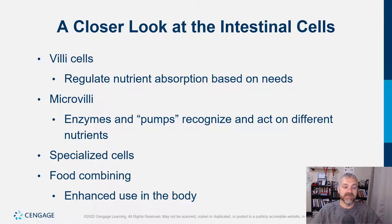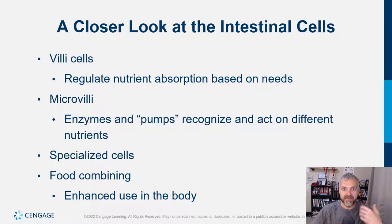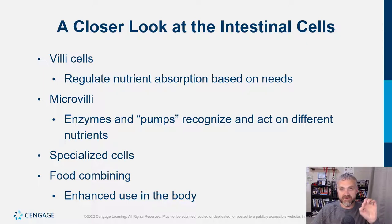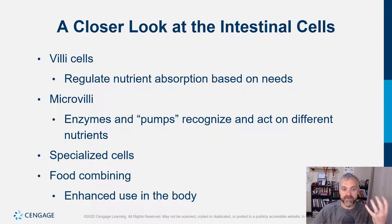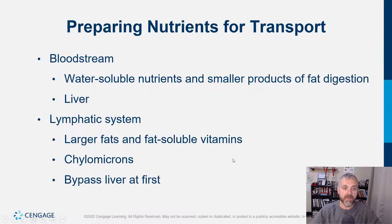Villi are the fingers that increase surface area and regulate absorption. Microvilli are microscopic little fingers on each of the cells. We have mucus-producing goblet cells, cells that produce enzymes, and cells whose primary job is absorption.